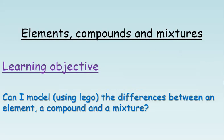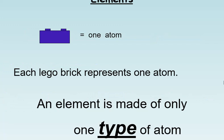Elements, compounds and mixtures. Today's learning objective is: can I model using Lego the differences between an element, a compound, and a mixture? Elements: each Lego brick represents one atom. An element is made of only one type of atom.